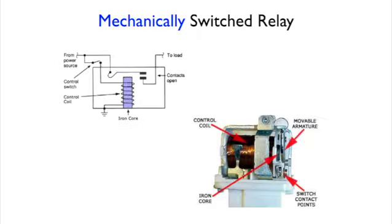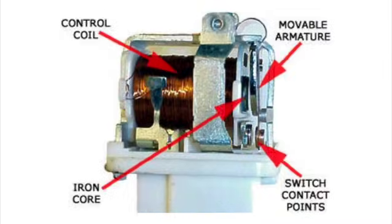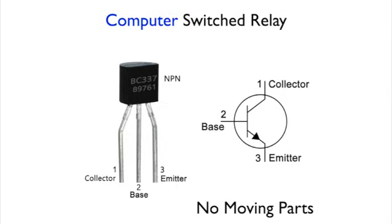On a mechanically switched relay, the top picture is a typical electrical diagram of what's inside it. And the bottom picture is an actual cutaway of what's inside. There are actually moving parts in there. And here is a zoomed in view so that you can see it better. On the computer switched relay, the right picture is a typical electrical diagram. And the left is an actual relay. There are no moving parts. It's all circuitry.